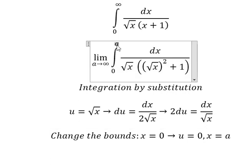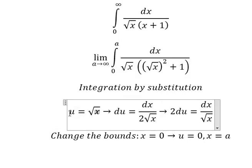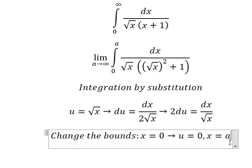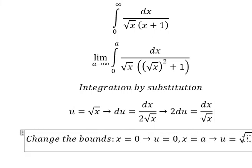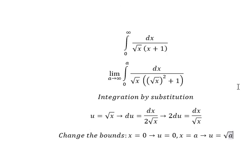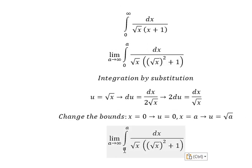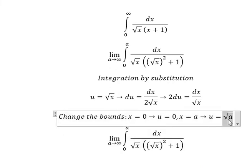When x equals a, we substitute a to find the value of u, so u equals the square root of a. So 0 stays the same, and a we change to the square root of a.